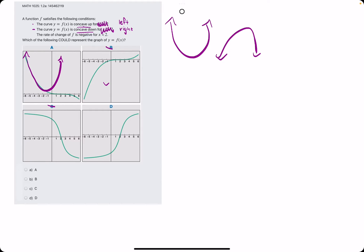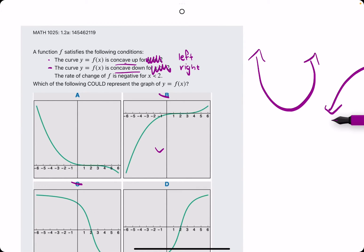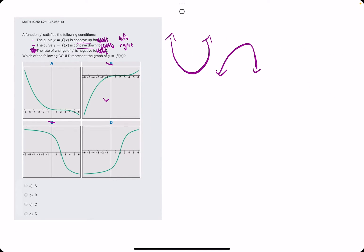And then between A and D, this is where statement three comes into play. The rate of change is negative for a certain interval. Again, we can ignore that inequality, and all we're checking is that the rate of change is negative. Rate of change being negative means that the slope is negative. In other words, the function is decreasing. If instead it said the rate of change is positive, that would mean you'd have a positive slope, or an increasing function.